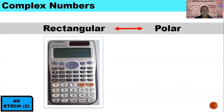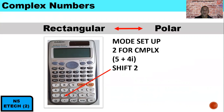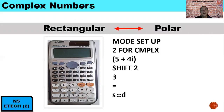Using a Casio calculator, here's how to convert rectangular to polar. Set the calculator to complex mode (option 2), enter open brackets 5 plus 4i close brackets, press Shift-2 for the complex menu, select 3 to convert to polar form, press equals, then the SD button to get the value in polar form. You'll need to practice this on your own calculator, as we won't go through the steps in the next example.